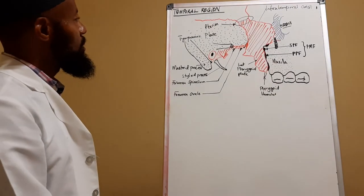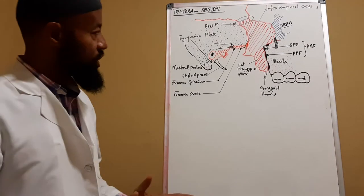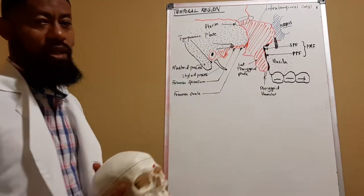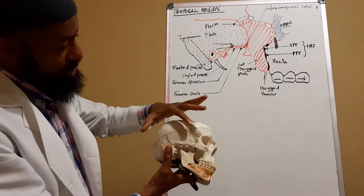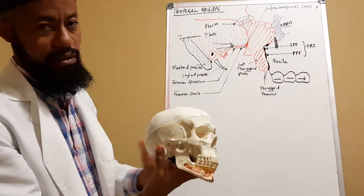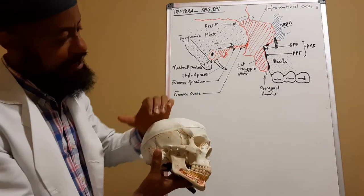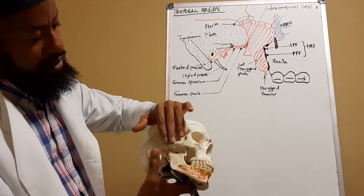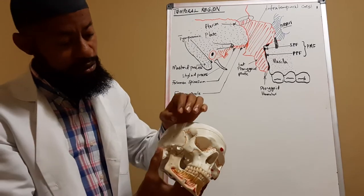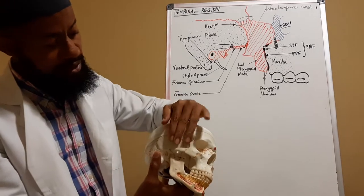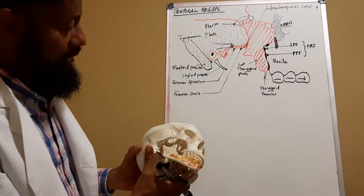We want to look at the temporal region. The temporal region is the region of the head — this is a skull or the cranium. The temporal region is the region of the skull or the head that includes the lateral area of the skull and deeper soft tissues that overlie the temporal fossa, superior to the zygomatic arch.